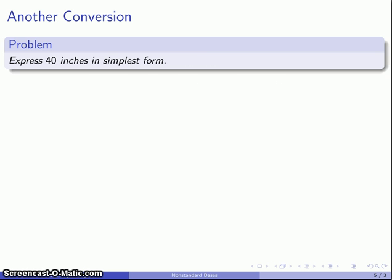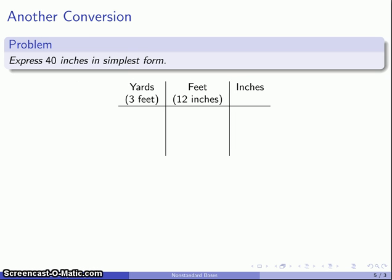We could even do this with the peculiar system that we use in this country. 40 inches in simplest form. Let's take a look at that. So here our units are going to be yards, 3 feet make up a yard, feet, 12 inches make up 1 foot, and then inches are the smallest units that we have. So we're dealing with 40 inches. We'll drop that in the inches column.